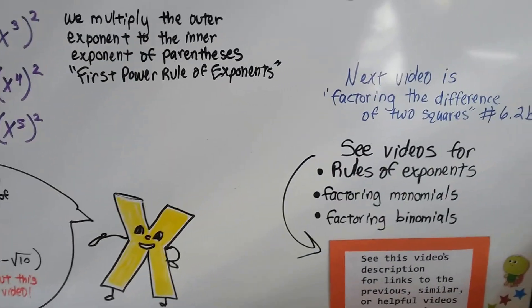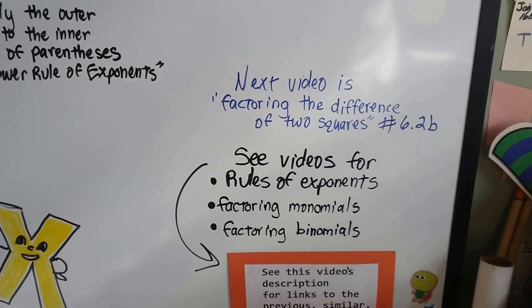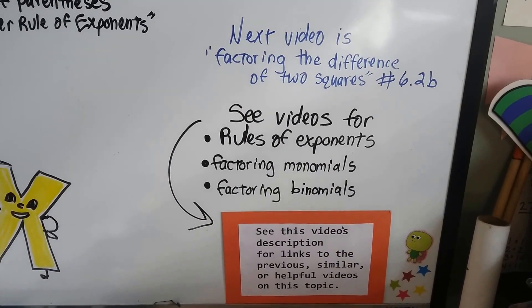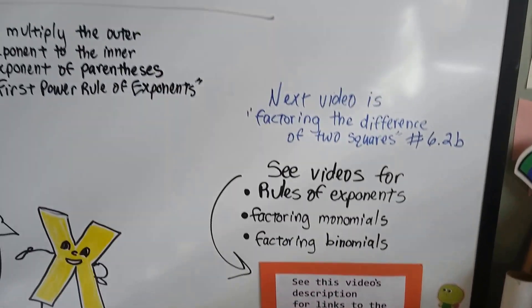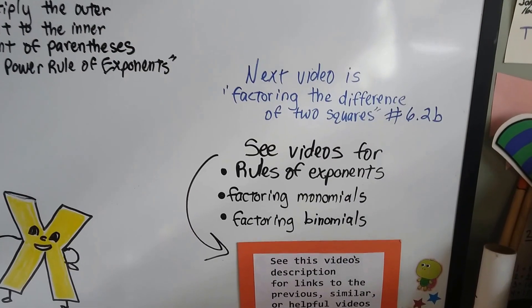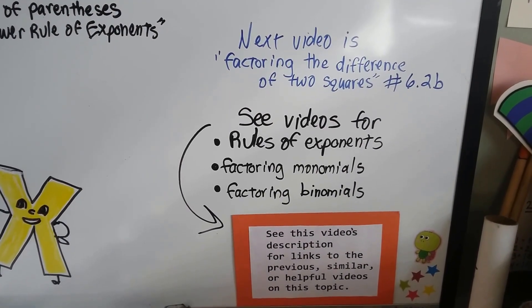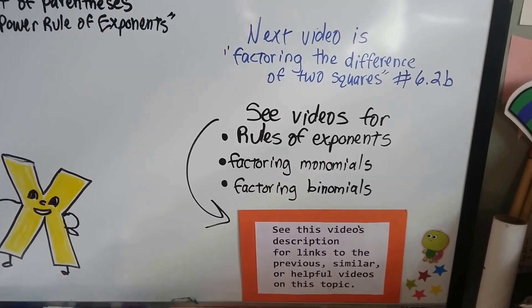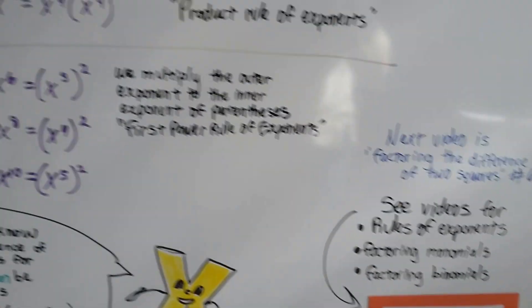Now our next video is factoring the difference of two squares, and that's going to be 6.2b. And if you want to see videos for the rules for exponents, like what I talked about here, or factoring monomials or factoring binomials, which we talked about right before this video, there's going to be a link in this description so you can go to those videos.